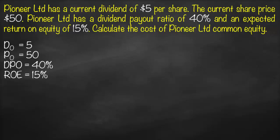What is the formula of the dividend discount model? The price today equals the dividend after one year divided by (i minus g). We can rearrange this formula to isolate i: swap P0 with (i minus g), then move g to the other side. So the cost of equity i equals D1 divided by P0, plus g.